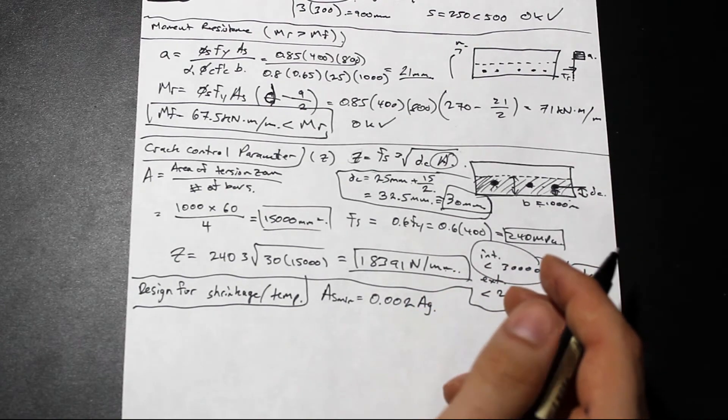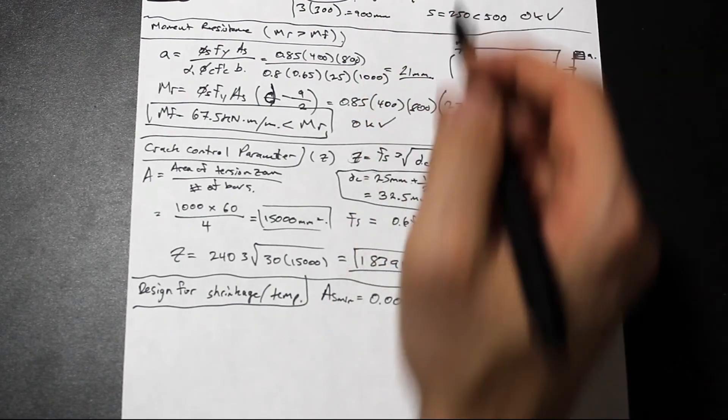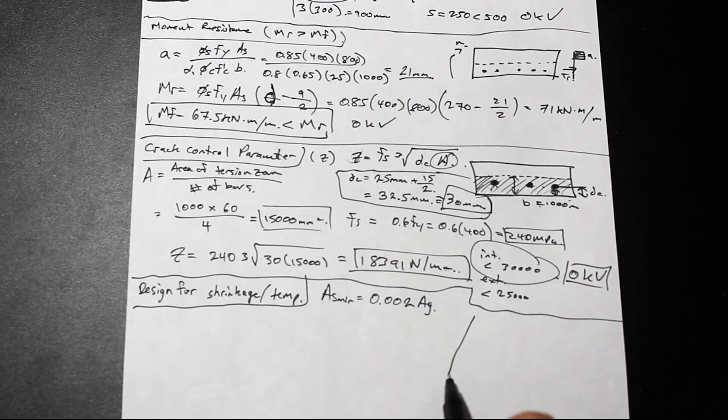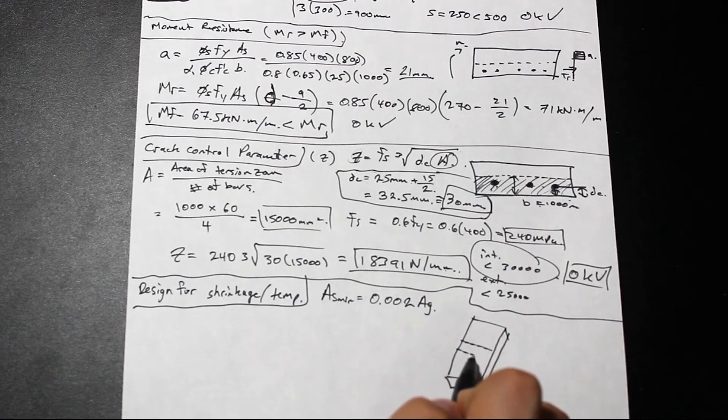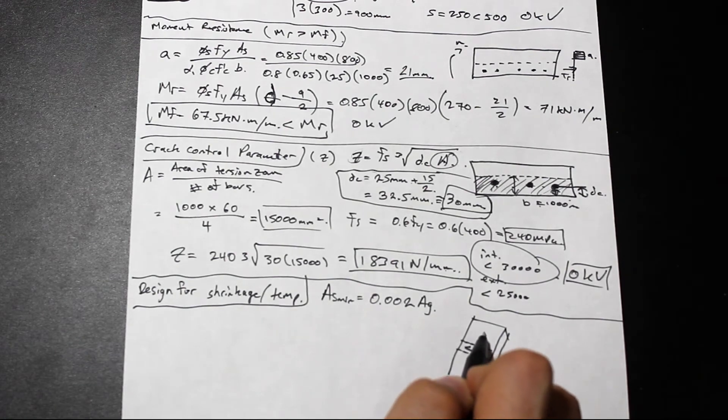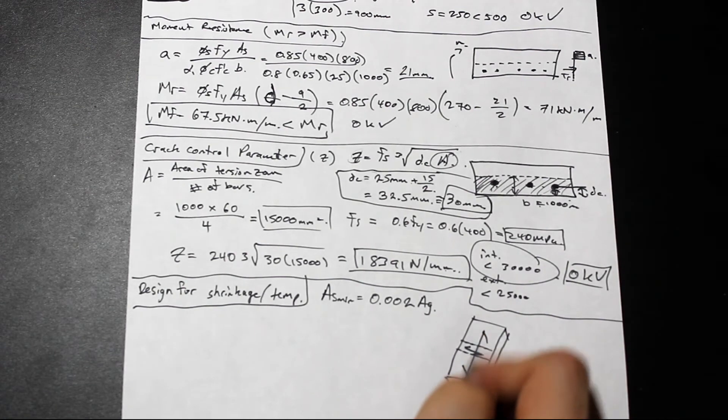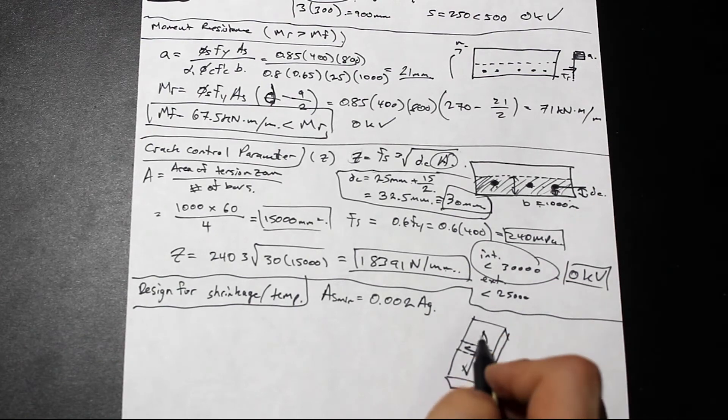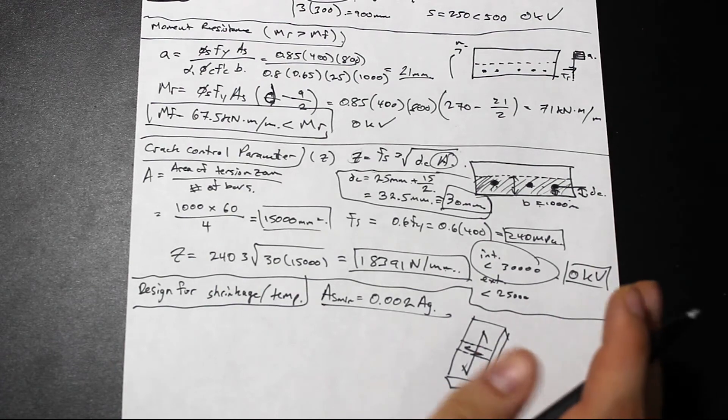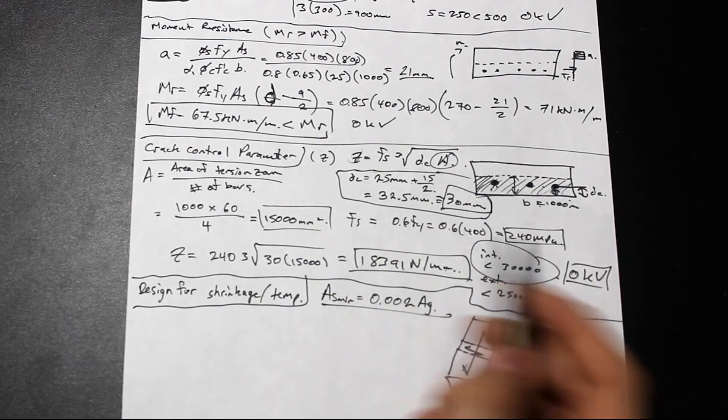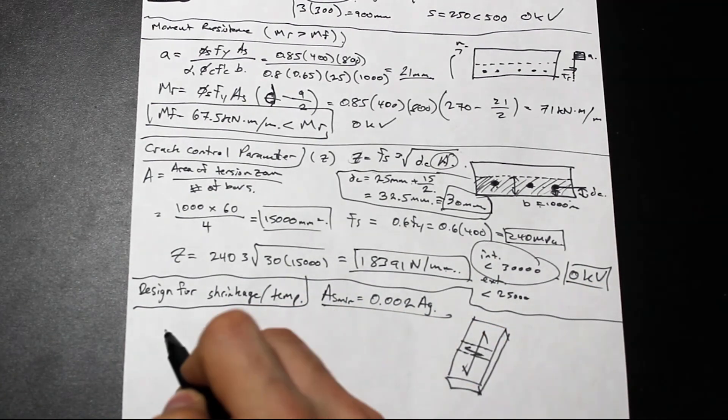The shrinkage reinforcement is going to be in the other direction, not the long direction. So if we have our slab here, this is our kind of long direction here. Our flexure is going to be transferred in this direction here, in the short direction. In the long direction here, we're going to provide some shrinkage reinforcement. That's going to just be equal to the minimum. There's no load that we have to check and design for. We're just going to provide just a small amount. We're simply going to provide the minimum.